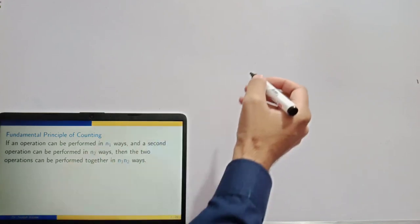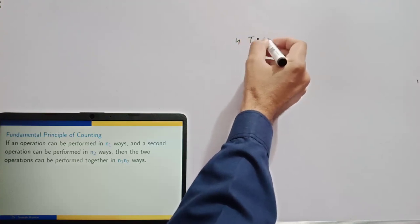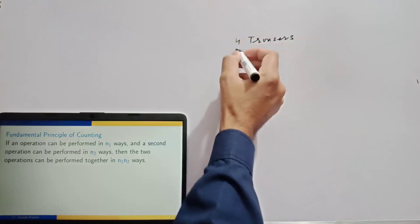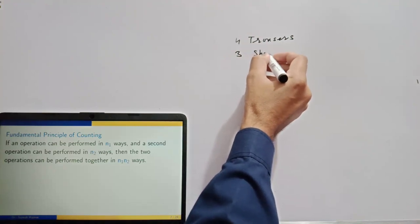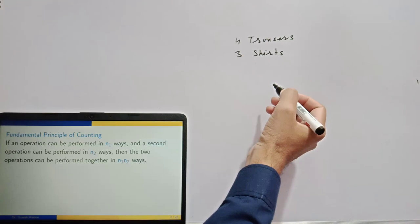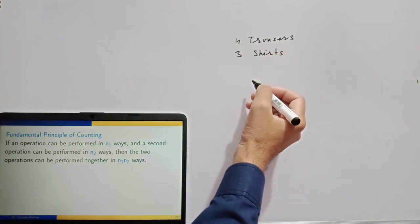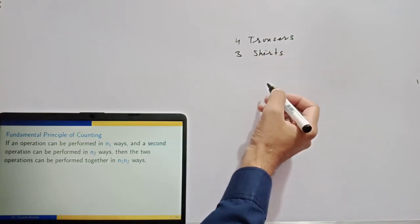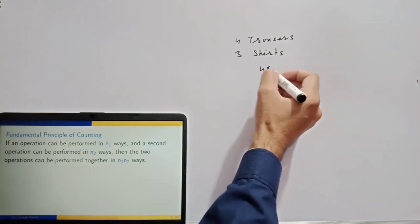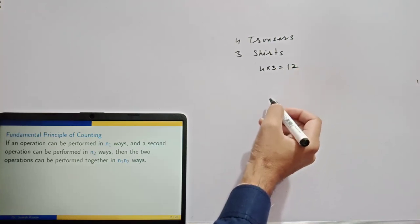For example, say you have four trousers and three shirts. So how many different dresses are possible from these given trousers and shirts? Four into three — in 12 different ways you have dresses.